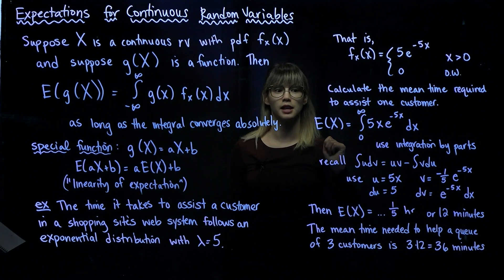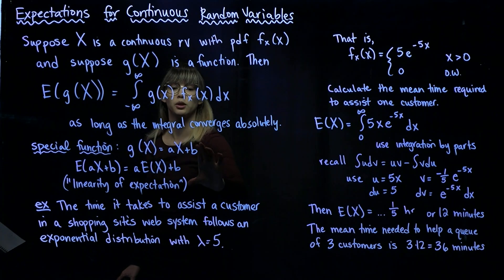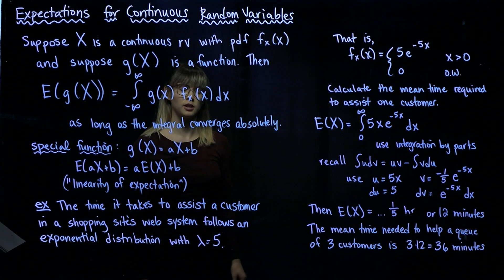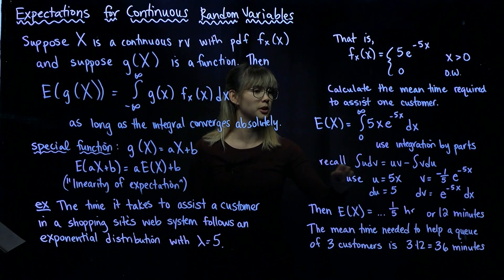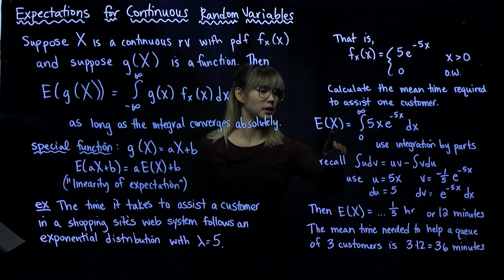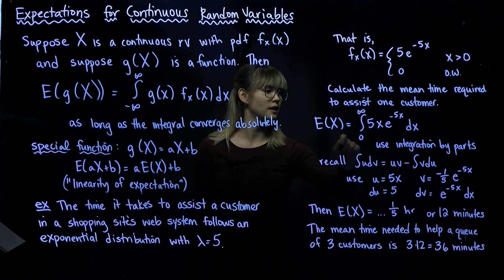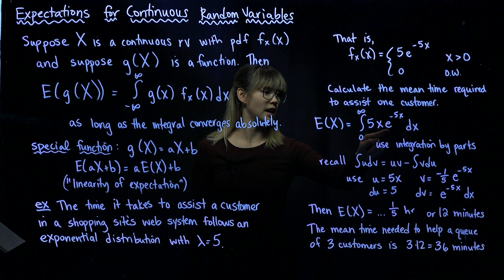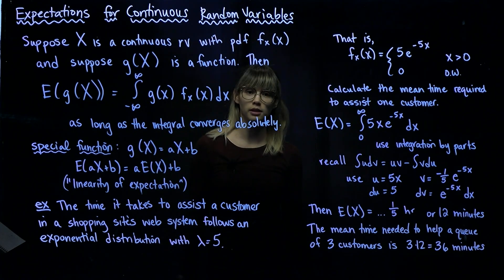First we're going to calculate the mean time required to assist one customer, and then we're going to apply this special function. The mean time required to assist one customer is the expected value of X. So we're going to integrate from 0 to infinity: 5x times e to the negative 5x dx, and we're going to use integration by parts.